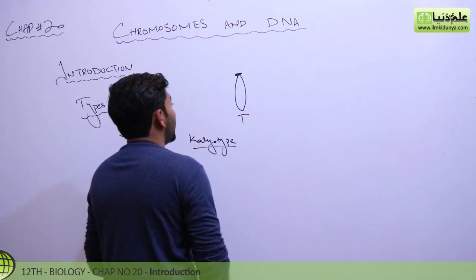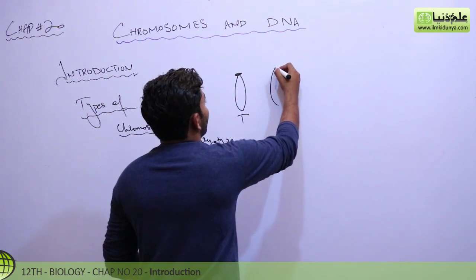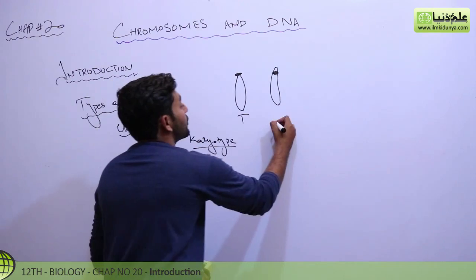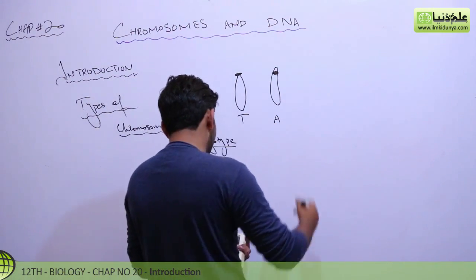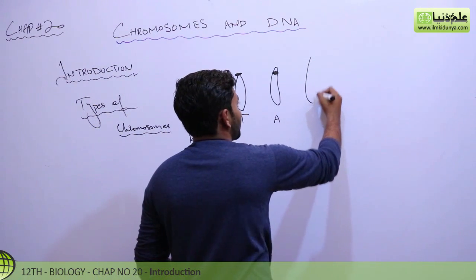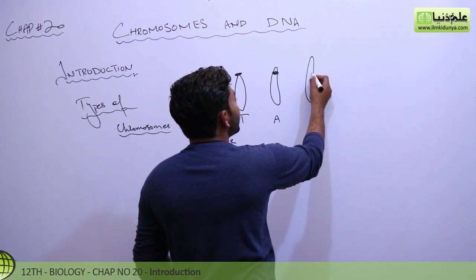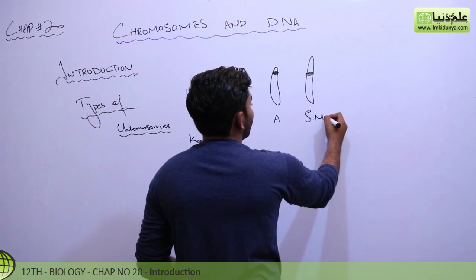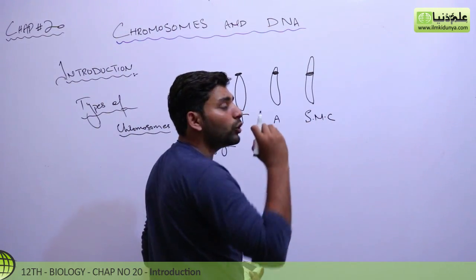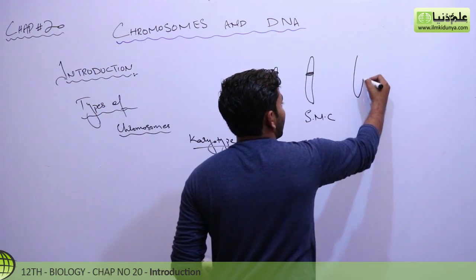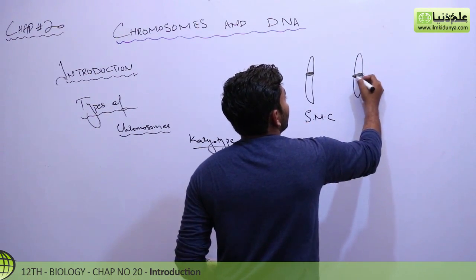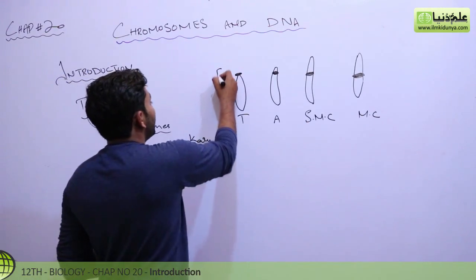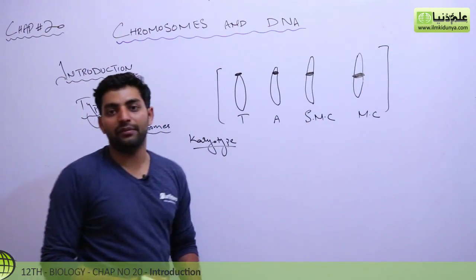You can also have acrocentric, where the centromere is a little bit off center. Then you have submetacentric, and when it happens in the center, we say metacentric. So these are different types of your chromosomes and you have to remember them.